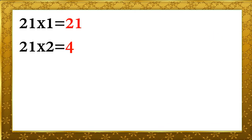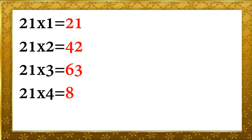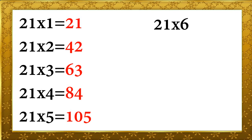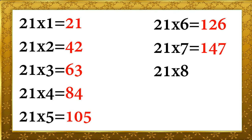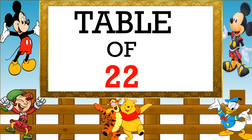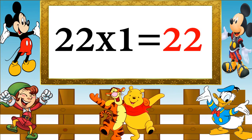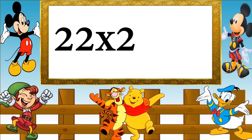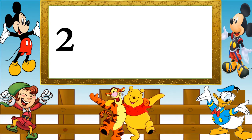21 ones are 21, 21 twos are 42, 21 threes are 63, 21 fours are 84, 21 fives are 105. 21 sixes are 126, 21 sevens are 147. 21 eights are 168. 21 nines are 189. 21 tens are 210. Table of 22. 22 ones are 22, 22 twos are 44, 22 threes are 66.